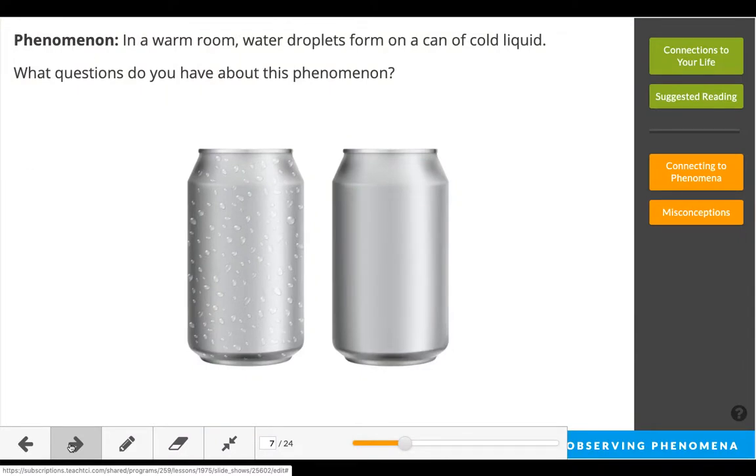So the big idea for lesson 5 is that in a warm room, water droplets form on a can of cold liquid. You've probably noticed that. If you put a cold beverage in a can or a glass outside in the sun on a warm summer day, you see droplets of water start to form on the outside of the can or the glass. In this lesson, we'll figure out why that happens.